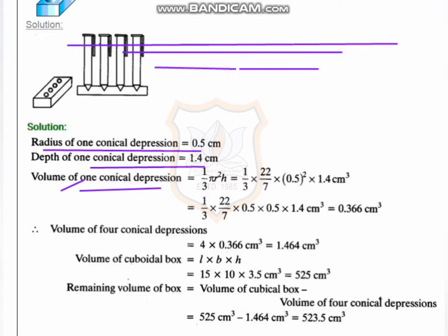The radius of each conical depression is 0.5 cm and the depth (height) is 1.4 cm. The volume of one conical depression equals 1/3 π r² h = 1/3 × 22/7 × (0.5)² × 1.4, which gives a value of 0.366 cm³.